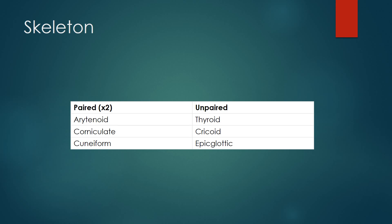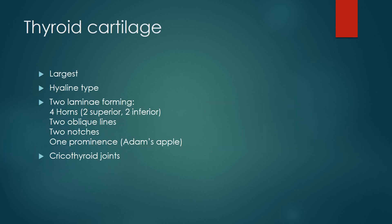Let's discuss each cartilage in detail. The thyroid cartilage is the largest. It is a hyaline type of cartilage with two laminae which form four horns — two superior and two inferior. It has two oblique lines onto which the thyrohyoid and sternothyroid muscles attach, two notches, and one prominence which is the superior laryngeal prominence or Adam's apple. It sits upon the cricothyroid joints, which articulate the thyroid cartilage with the cricoid cartilage, allowing some rotation and gliding.